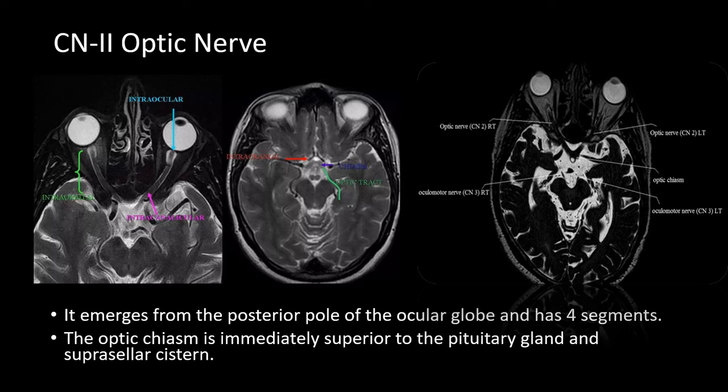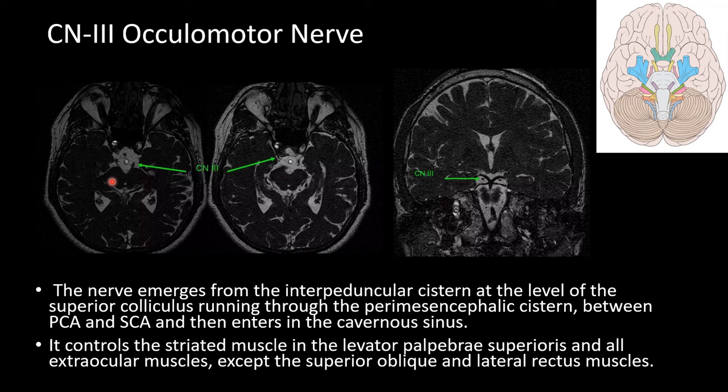The third cranial nerve is the oculomotor nerve. The nerve emerges from the interpeduncular cistern at the level of the superior colliculus, running through the perimesencephalic cistern between the posterior cerebral artery and the superior cerebellar artery, and then enters the cavernous sinus. It controls the striated muscle in the levator palpebrae superioris and all extraocular muscles except the superior oblique, which is supplied by the fourth cranial nerve, and the lateral rectus, which is supplied by the sixth cranial nerve.